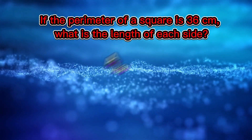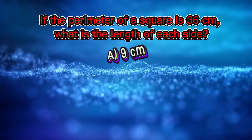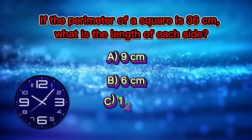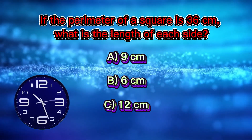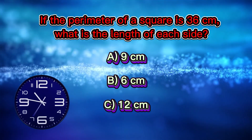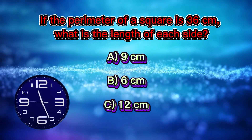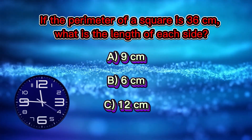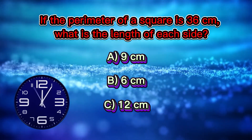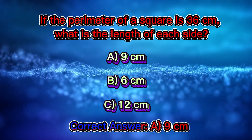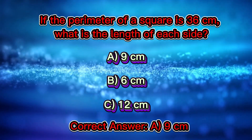Question 3: If the perimeter of a square is 36 centimeters, what is the length of each side? A) 9 centimeters, B) 6 centimeters, C) 12 centimeters. Correct answer: A) 9 centimeters.